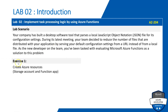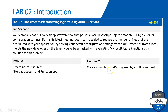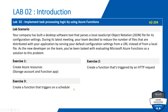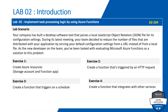We'll break this problem into five exercises. Exercise 1: create Azure resources — specifically a storage account and a function app. Exercise 2: create a function triggered by an HTTP request. Exercise 3: create a function app that triggers on a schedule — a timer-based trigger. Exercise 4: create a function app that integrates with other services, passing data between applications. Exercise 5: clean up the resources.